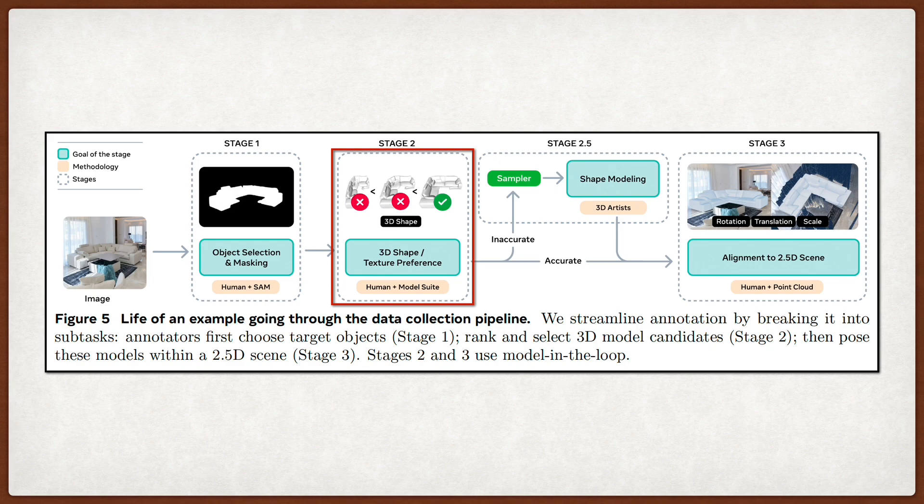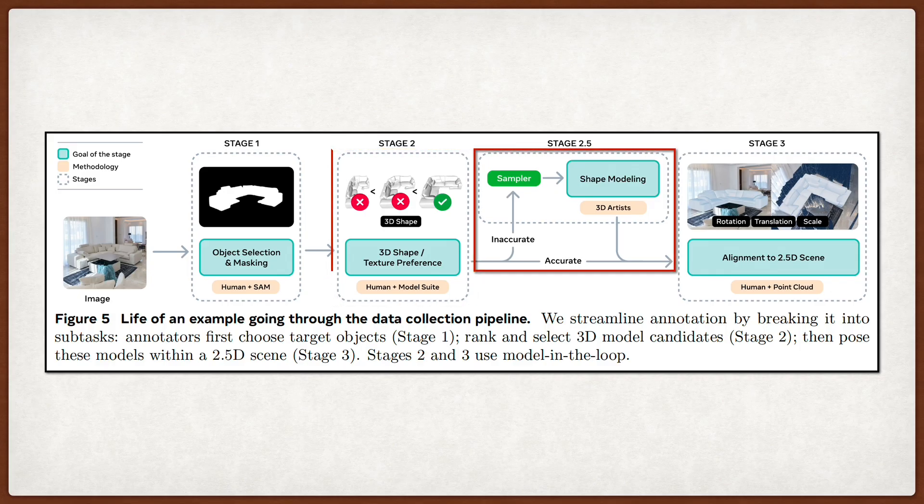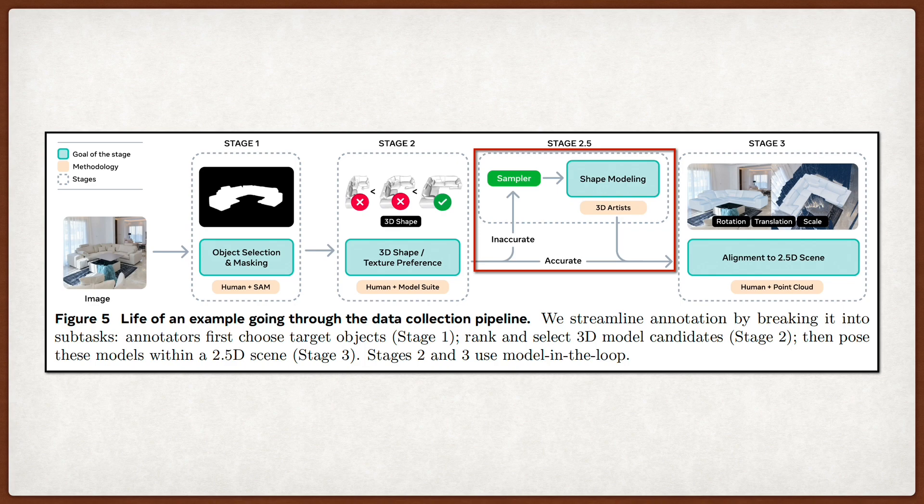But there is a catch, because sometimes the model is just bad, and all the candidates are garbage, so the humans have nothing good to pick. To solve this, they introduce stage 2.5, where they route the hardest examples to actual professional 3D artists, who manually create the ground truth meshes. This is expensive, so they only do it for the tails of the distribution, but it seeds the model with high-quality data in areas where it struggles, which creates a flywheel effect. As the model gets better, it produces better candidates for the general annotators, which leads to better data, and an even better model in a virtuous cycle.